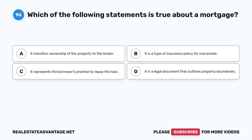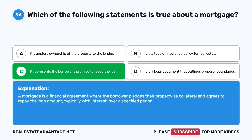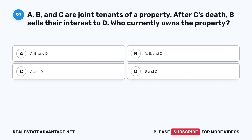Question 96: Which of the following statements is true about a mortgage? A. It transfers ownership of the property to the lender. B. It is a type of insurance policy for real estate. C. It represents the borrower's promise to repay the loan. D. It is a legal document that outlines property boundaries. The correct answer is C. A mortgage is a financial agreement where the borrower pledges their property as collateral and agrees to repay the loan amount, typically with interest, over a specified period.